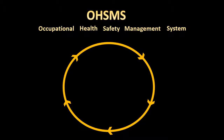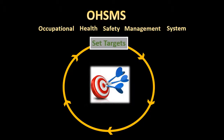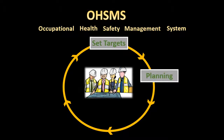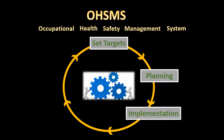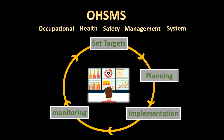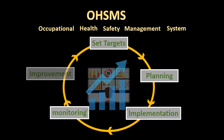Initially, performance targets of the system get laid out — for example, zero workplace deaths, or from a legal perspective, a clean work health and safety record. In order to achieve the targets, an implementation plan is then created and carried out. The effectiveness of the system must be continually monitored and improvements made where necessary.